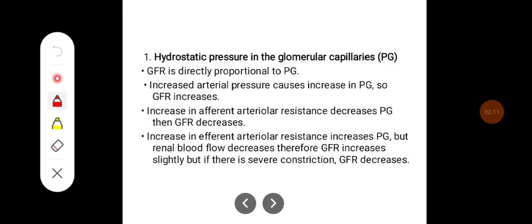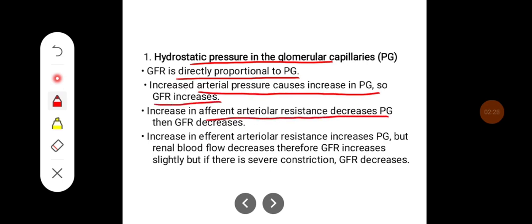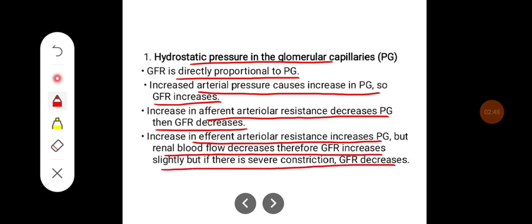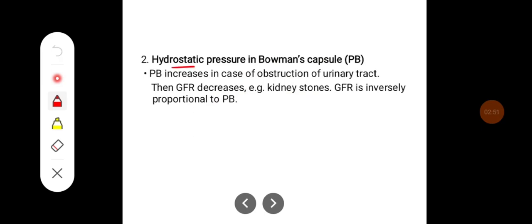GFR is directly proportional to the hydrostatic pressure in the glomerulus. Increased arterial pressure causes an increase in Pg, so GFR increases. An increase in afferent arteriolar resistance decreases Pg, so GFR decreases. An increase in efferent arteriolar resistance increases hydrostatic pressure in the glomerulus but decreases renal blood flow; therefore GFR increases slightly, but with severe constriction GFR decreases.